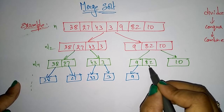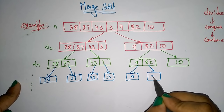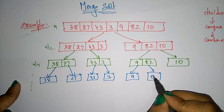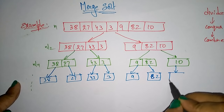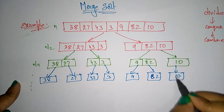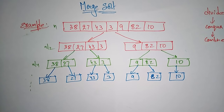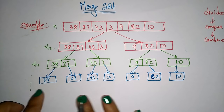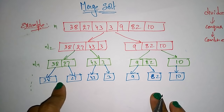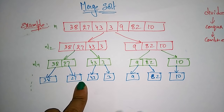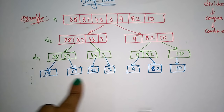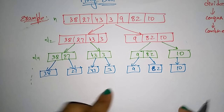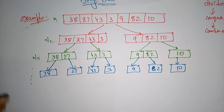9, 82, and 10 — conquering recursively means all elements come down to size 1. Now combine the array by sorting.